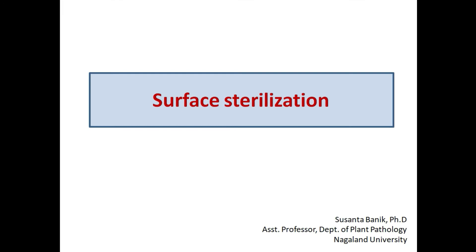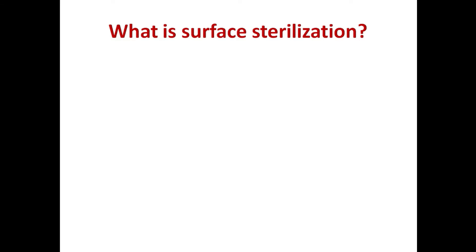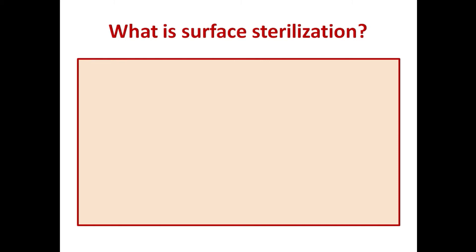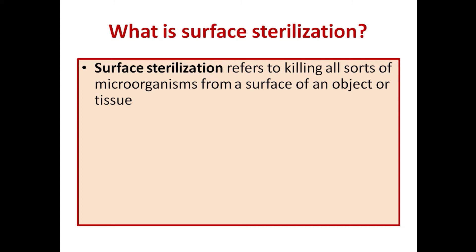The topic for today's discussion is surface sterilization. It is an important step that a researcher should know before isolation of a microbe or pathogen from a healthy or diseased plant sample. This important laboratory step is also required equally by those who carry out tissue culturing of plants. Surface sterilization refers to killing all sorts of microorganisms from the surface of an object or tissue.